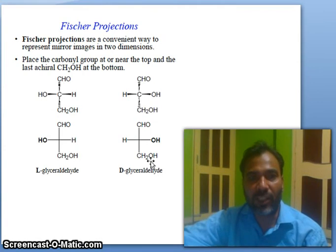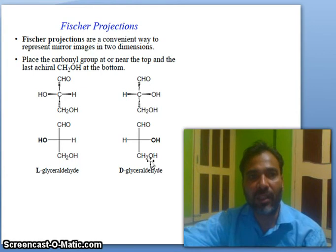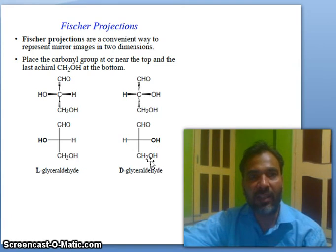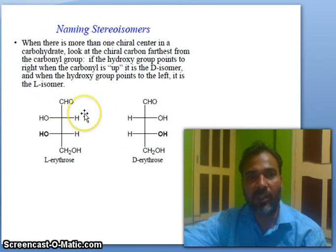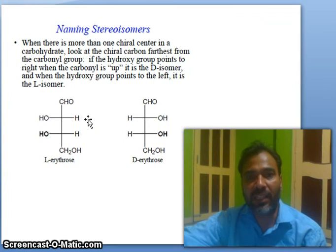Fischer projections are a convenient way to represent mirror images in two dimensions. Place the carbonyl group at or near the top and the last chiral carbon (CH₂OH) at the bottom. When naming stereoisomers with more than one chiral center in a carbohydrate, look at the chiral carbon farthest from the carbonyl group.